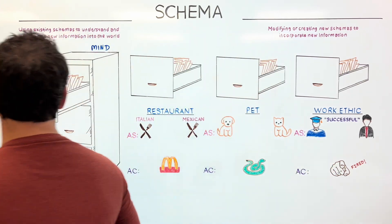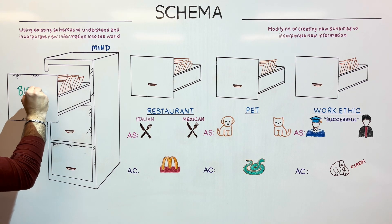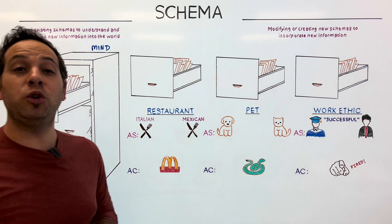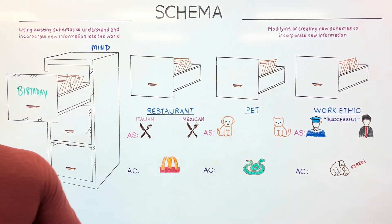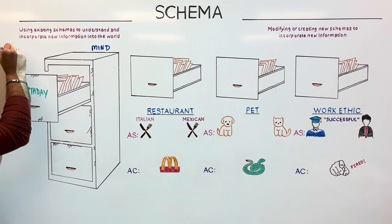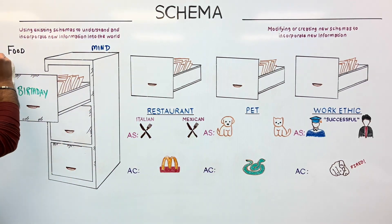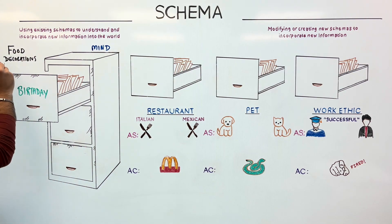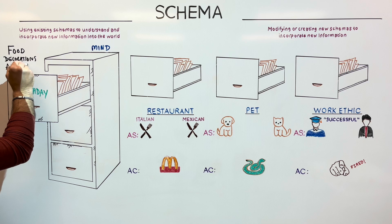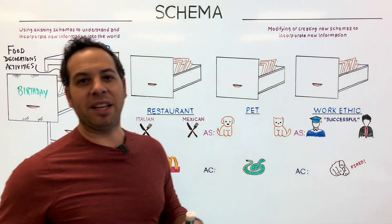Let's do a quick example together to make sense of this. Let's imagine we are going to a birthday party, and I tell my four-year-old, 'Hey, we're going to a birthday party.' He has created a mental structure in his head about what to expect. He knows what type of food's going to be there — there'll be some sort of sweets like cake or cupcakes. He knows there's probably going to be some sort of decorations, maybe balloons in certain colors. And he might also know the type of activities to expect when he's there. So all of this becomes the documents in our analogy of a filing cabinet.